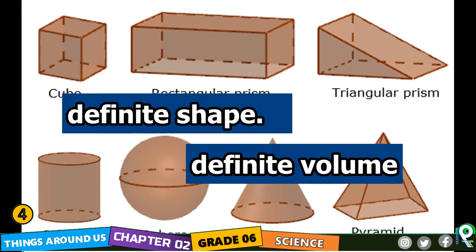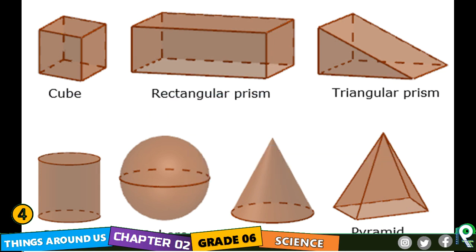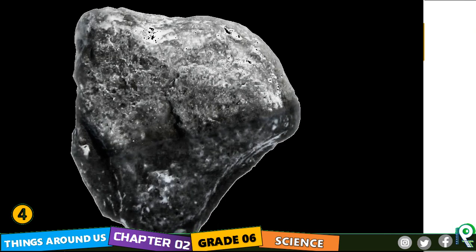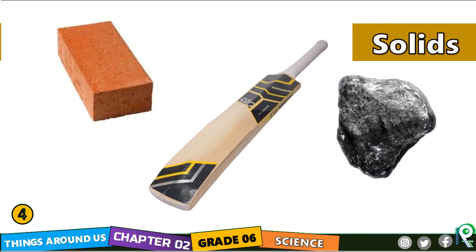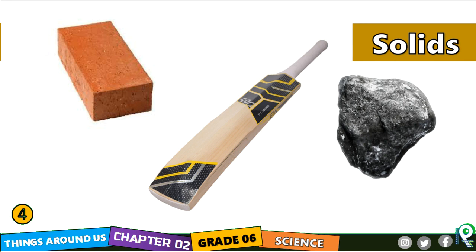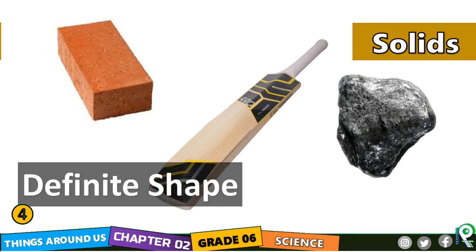Also, there is a definite volume for solids like a brick, bat, and stone. Those are known as solids because they have a definite shape and a definite volume. So the characteristics of solids are: definite shape and definite volume.